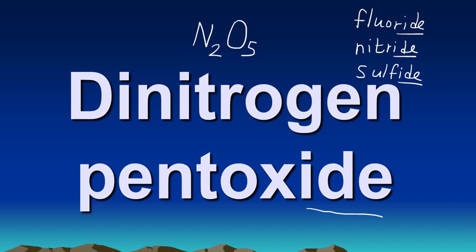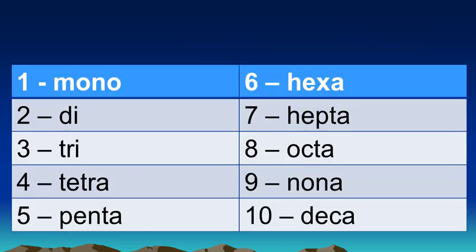Now you might be wondering what are the prefixes. We know that two is di and five is penta. Well, here are the prefixes for one through ten. One is mono, two is di, three is tri, four is tetra.